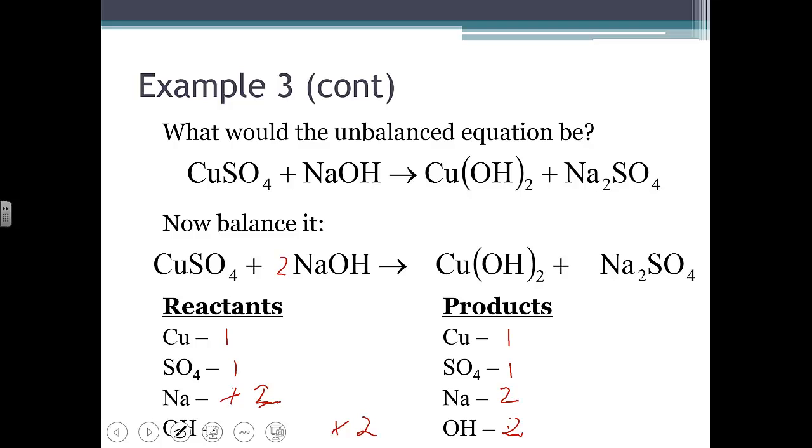That changes my count of sodium to two and also my count of hydroxide to two. And if I look, my counts now match for all of them. One copper, one sulfate, two sodiums, two hydroxides. So one to two to one to one - that's a simplified ratio. We've got the balanced equation.